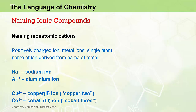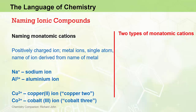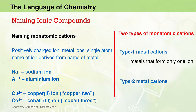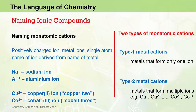Both of these ions have Roman numerals in brackets to identify the charge on the ion. So we can see that in terms of naming monatomic cations, there are at least two types — we label them type 1 metal cations and type 2 metal cations. Type 1 metal cations are derived from metals that form only one ion; the ion can only have one charge. Sodium and aluminium are examples. Type 2 metal cations are derived from metals that can form multiple charges, identified with a Roman numeral label. For example, copper can form both the copper 1 and copper 2 ions, and cobalt can form both the cobalt 2 and cobalt 3 ions.